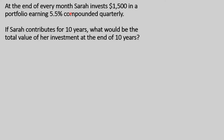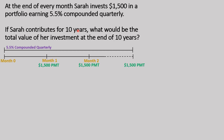To solve this, we use the time value of money. The first thing to do is draw a timeline. We see it's 5.5% compounded quarterly for the whole 10-year period. Sarah is investing $1,500 on a monthly basis. We calculate the total number of payments n by taking the number of years — 10 — and multiplying by the payment frequency — 12 months per year.